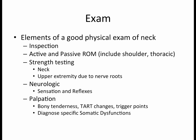When we do a physical exam, we're ruling in and ruling out different diagnoses. Elements of a good physical exam of the neck include inspection, active and passive range of motion — including the shoulder and thoracic due to proximity — strength testing of the neck and upper extremity due to nerve roots, neurologic assessment including sensation and reflexes, palpation for bony tenderness especially after trauma, tissue texture changes, trigger points, and specific somatic dysfunctions. If your history leads you to other causes of referred pain, such as myocardial infarction, widen your exam accordingly.